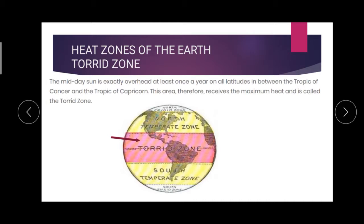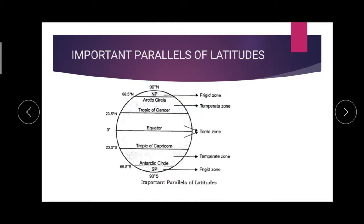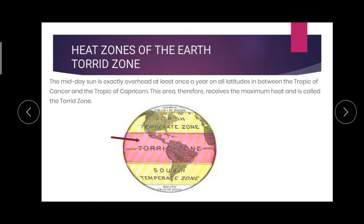Heat zones of the earth. First, we are going to see about the Torrid Zone. Where is the Torrid Zone? It is between the Tropic of Cancer and the Tropic of Capricorn. This place is called the Torrid Zone.